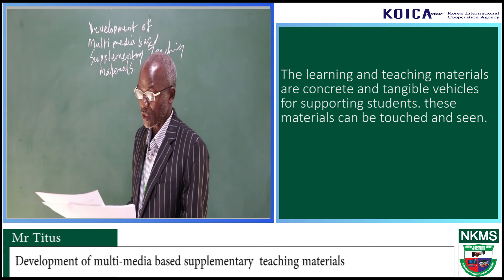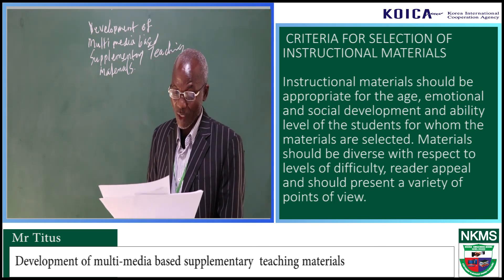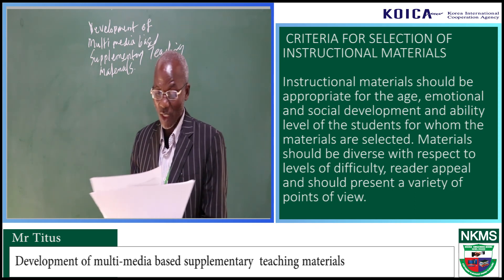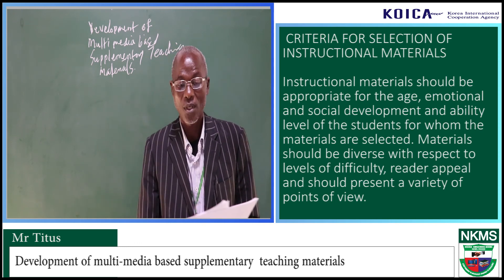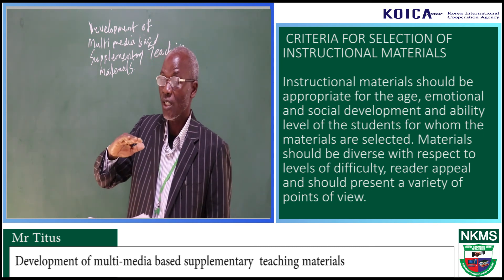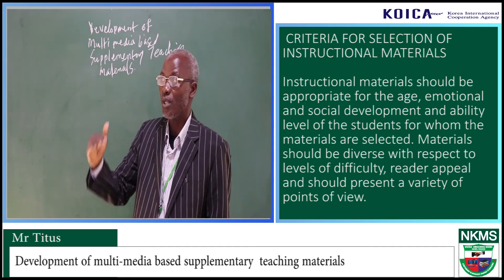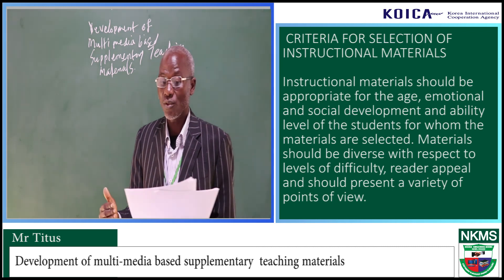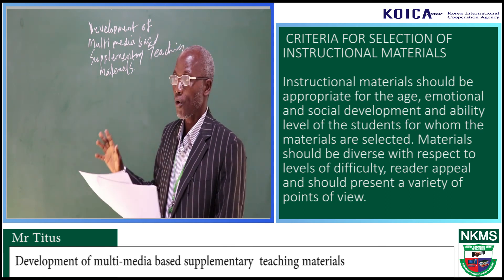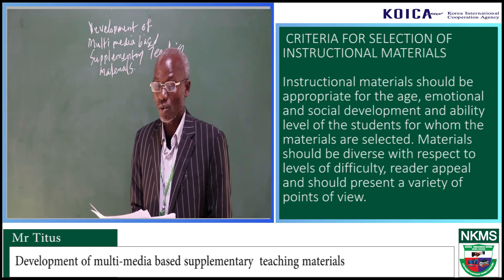What are the criteria for selection of instructional materials? Instructional materials should be selected based on appropriate age, emotional and social development, and ability level of the student for whom the materials are selected. So when instructional materials are chosen, consider the age and consider the level of understanding. Materials should also be diverse with respect to levels of difficulty and reader appeal, so that students will be able to handle the material well, and should present a variety of points of view. Be diverse so that both slow and fast learners are able to get everything right.